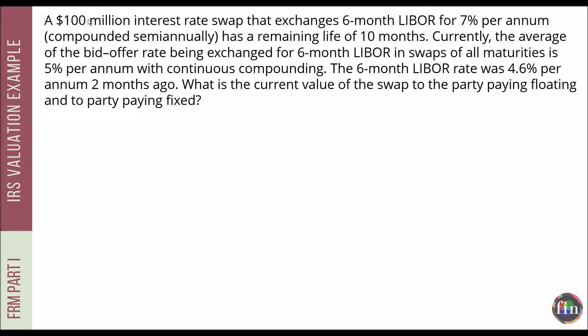We are given a swap whose notional is 100 million and exchanges happen every six months. The swap rate when the swap was initiated was 7% per annum, compounded semi-annually, with a remaining life of 10 months. Since it's 10 months remaining and six-monthly exchanges, there are two exchanges left.